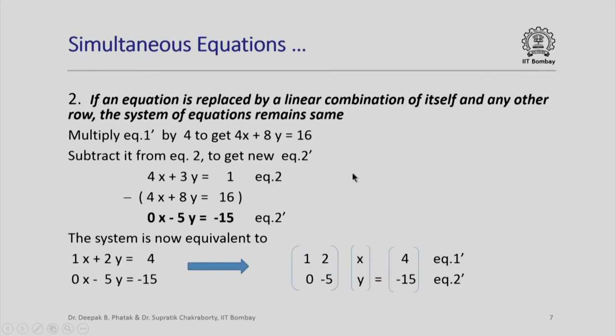The second important property that we utilize to implement the Gaussian elimination algorithm is: if an equation is replaced by a linear combination of itself and any other row, the system of equations remains same. So basically we are trying to transform the system into an equivalent system, but the new system should be more amenable to find the final solution. In terms of practical usage, we can multiply equation 1 prime by 4 to get 4x plus 8y equal to 16. And now if we subtract it from equation 2 to get a new equation 2 dash, let us look at this operation. Equation 2 was originally 4x plus 3y equal to 1. After multiplying equation 1 prime by 4, we have got 4x plus 8y equal to 16 which we subtract from equation 2 and get a new equation, equation 2 prime, which happens to be 0x minus 5y equal to minus 15.